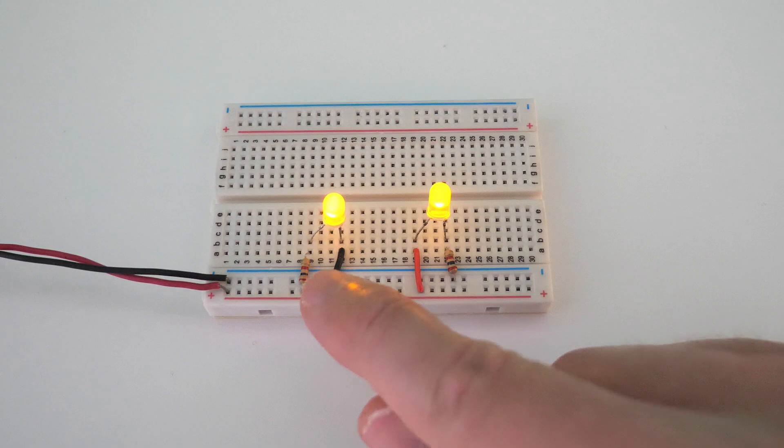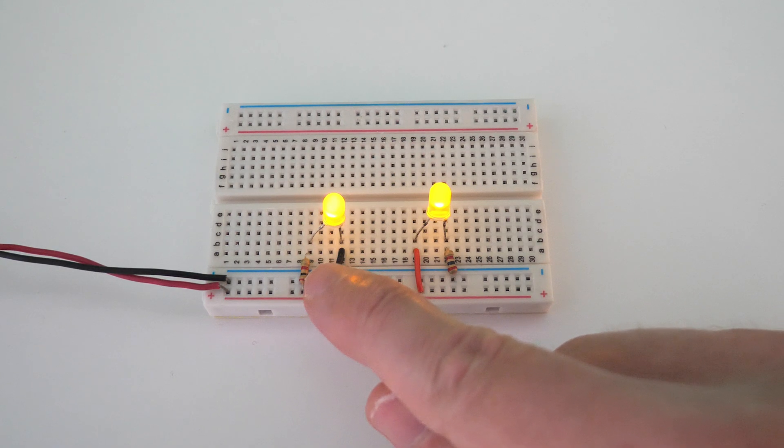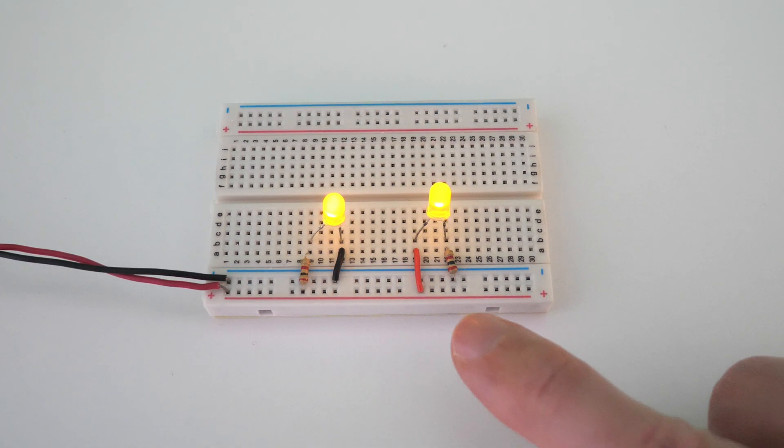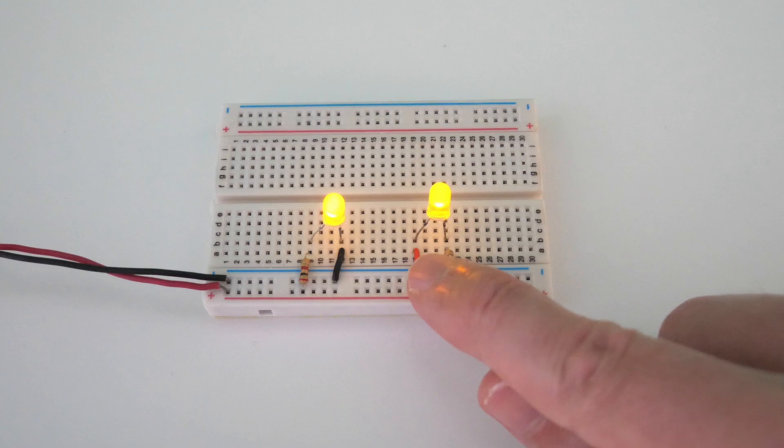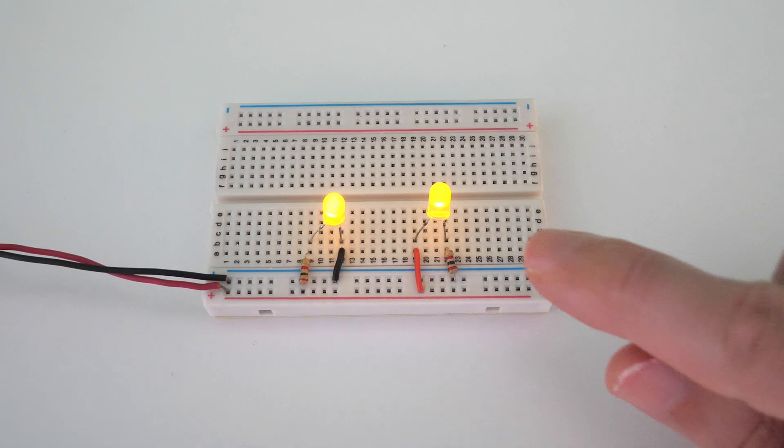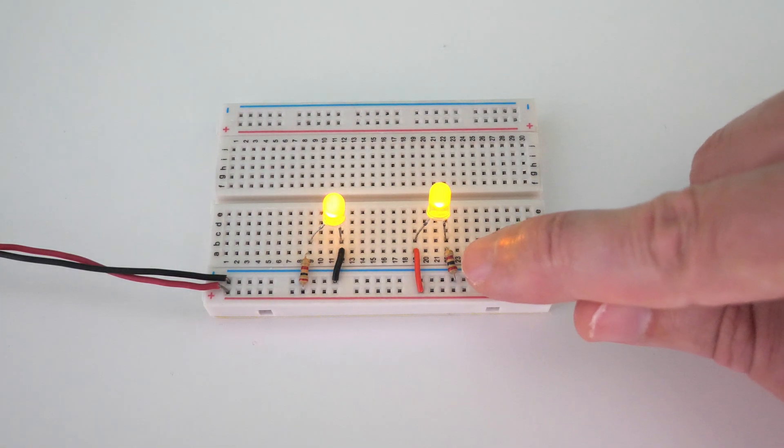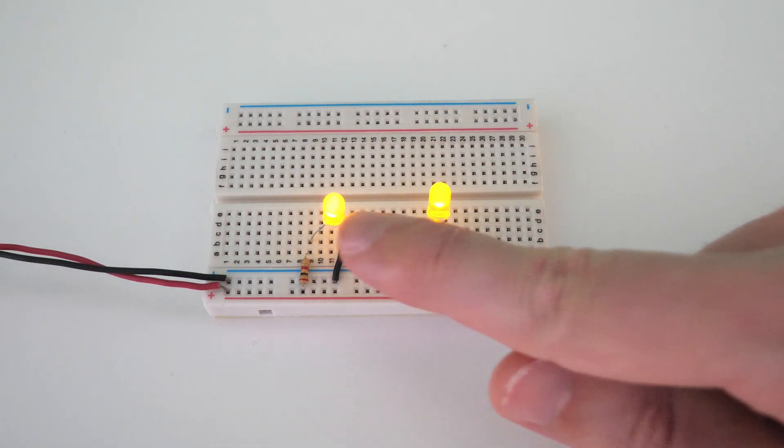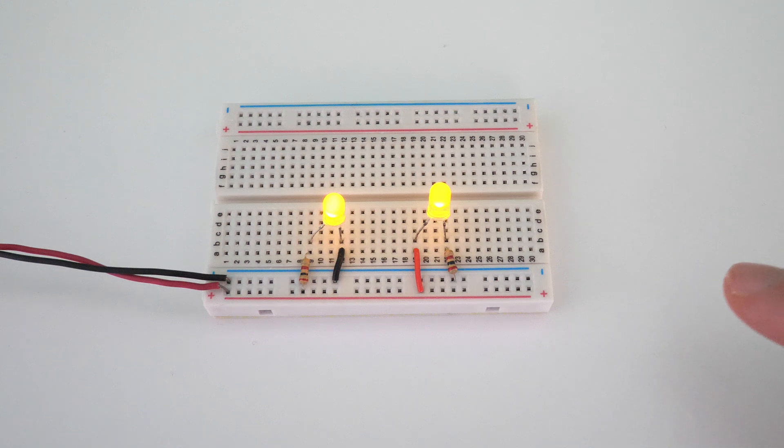I typically like to build circuits where the current limiting resistor is going into the positive rail, and then I use a black jumper to go into the ground. However, it's perfectly valid to use a red jumper wire to connect to the positive rail and then add your current limiting resistor going into the ground. The voltage drop across both of these LEDs is going to be exactly the same.